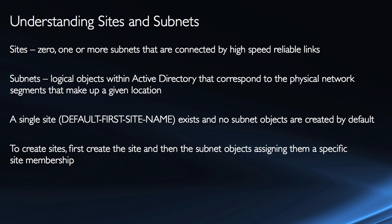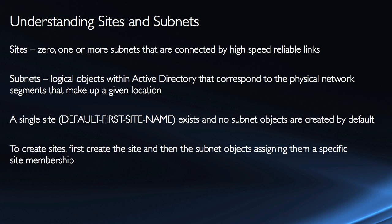That sounds a little bit odd because they say zero — well, how can it be zero? Basically, because you can create a site and not create any subnets. In fact, that's the default setup. So typically when we create sites, it's going to contain subnet objects. Subnet objects are logical objects within Active Directory that correspond to the physical network segments that make up a given location.